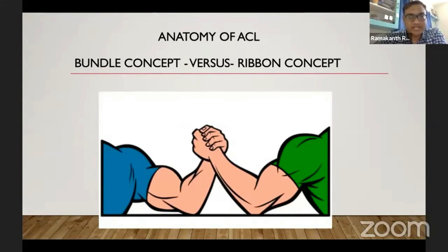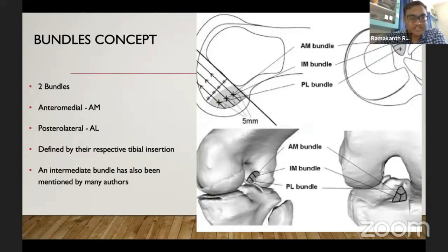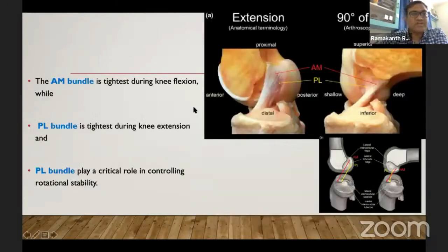To better understand the anatomy from recent cadaveric dissections, two models have been put forth: the bundle concept and the ribbon concept. In the bundle concept, the ACL contains two bundles — the anteromedial bundle and the posterolateral bundle — defined by their respective insertions. Some authors have also shown an intermediate bundle. The anteromedial bundle is tight during flexion, and the posterolateral bundle is tight during extension.